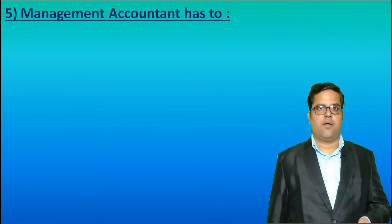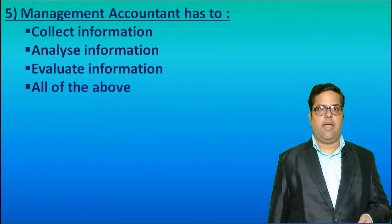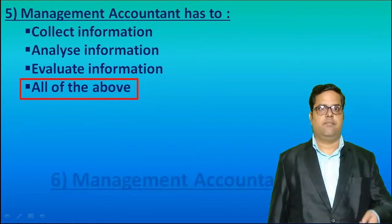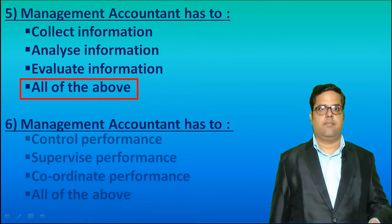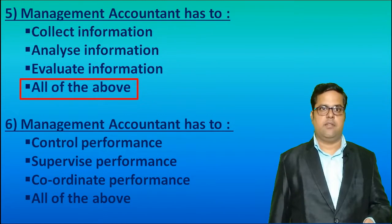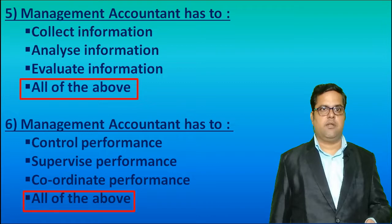Fifth, the Management Accountant has to Collect Information, Analyze Information, and Evaluate Information. So, the correct answer will be All of the above. Sixth, the Management Accountant has to Control Performance, Supervise Performance, and Coordinate Performance. The Management Accountant has to do all of them, so option four — All of the above — is correct.